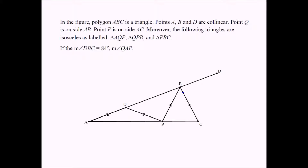So the size of this angle is 84 degrees. I'm going to call the angle QAP as X. And by this angle, I mean QAP. Well, if triangle AQP is isosceles, this base angle has to be X as well. So I'm going to label X right here.